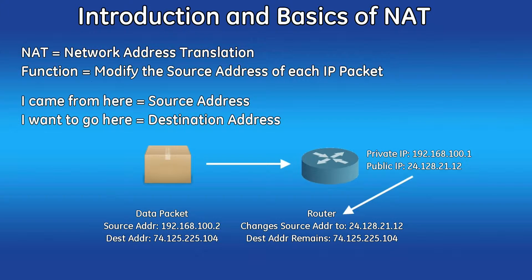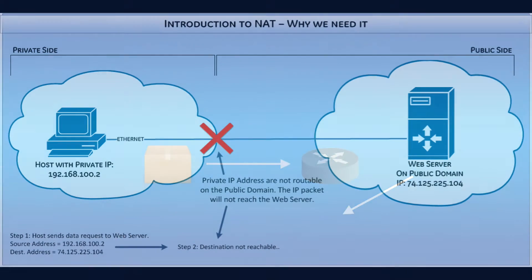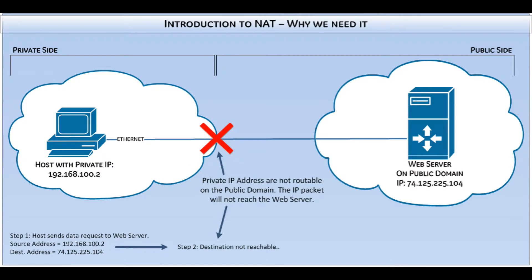As displayed, the data packet gets sent to the router device with NAT enabled. That router changes the source address of that data packet to the public IP address of the router. The most common use case for NAT is when a host with a private IP address wants access to the public internet.